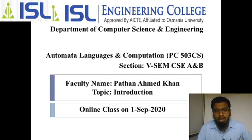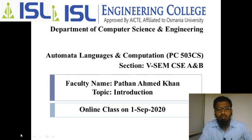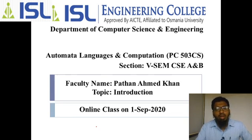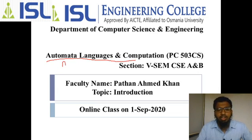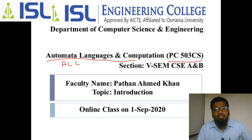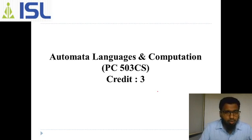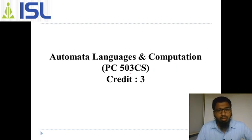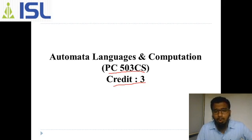In this class we are going to see what is your syllabus and what is the credit of your subject. This subject name is ALC, subject code is PC 503 CS. We will now move to our class on Automata Language and Computation. If you pass this subject you will get 3 credits.